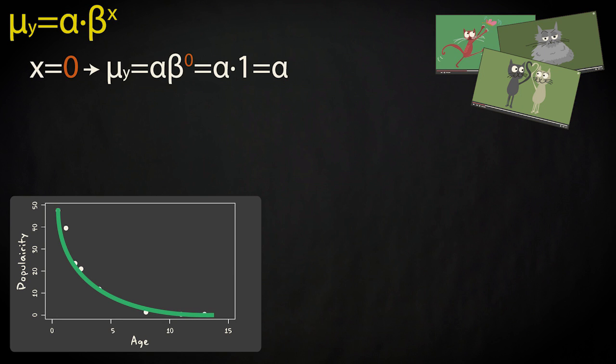If x equals zero, β to the power of x equals one. So the equation reduces to μ equals α. This means that α represents the intercept, or the starting value at x equals zero.